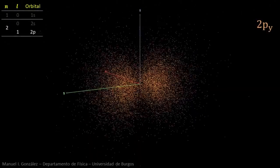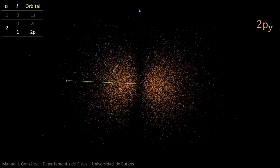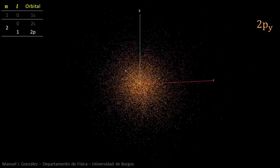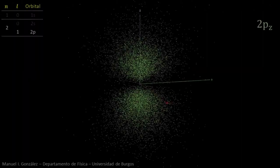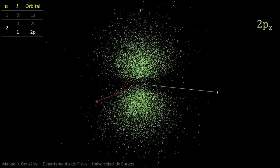The second one, 2py, lies along the y-axis. Finally, this is the 2pz orbital.